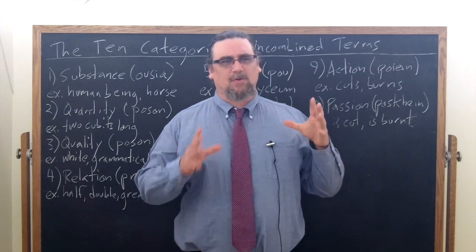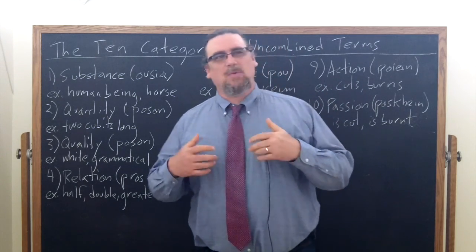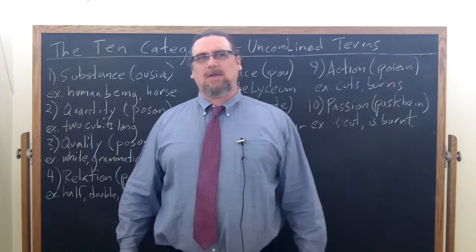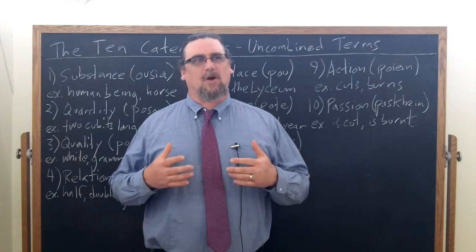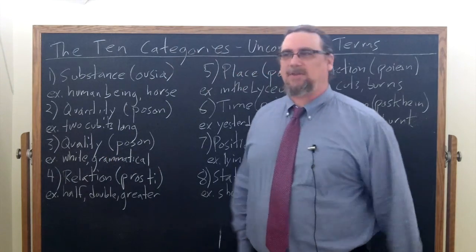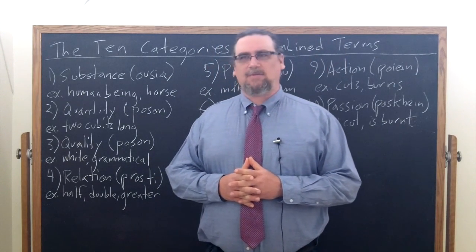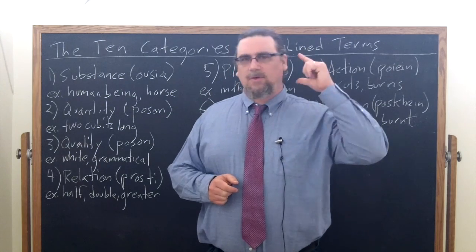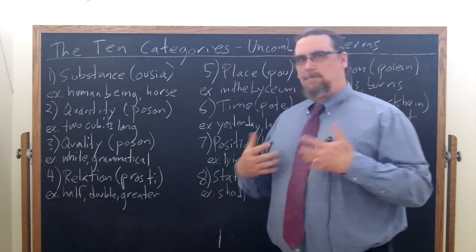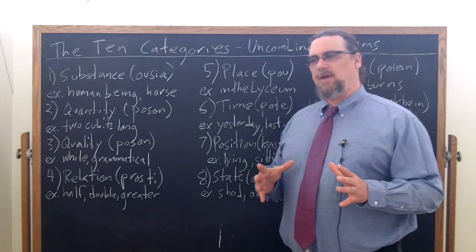We're not trying to make sense of it in terms of our own categories. When we say we're categorizing things, we're putting them into selections. That would actually be more similar to what the Greeks called the process of composition and division — dividing things into classes, making distinctions. Here, what we're talking about is something that has to do with language and has to do with thought, but also has to do with what language and thought are saying about being, about reality. And Aristotle begins this section by saying we're talking about uncombined terms.